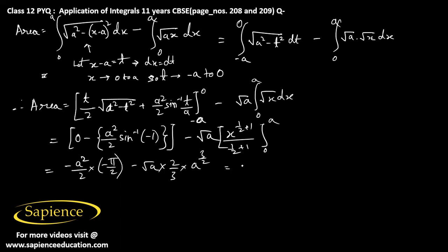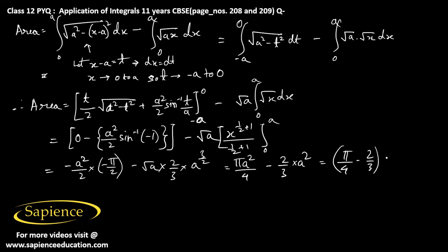Combining the results: minus a squared over 2 times minus pi over 2 gives pi a squared over 4, minus 2 over 3 a squared. Therefore the final answer is pi over 4 minus 2 over 3 times a squared square units.